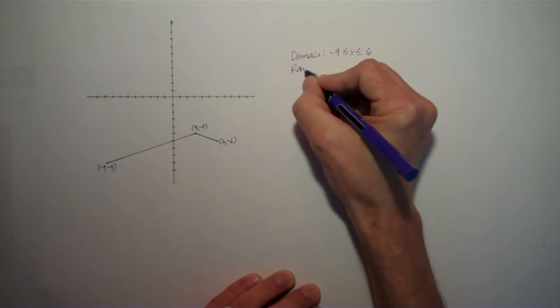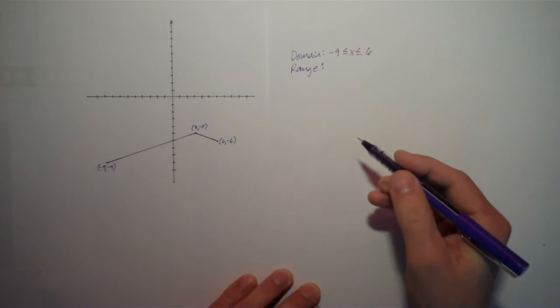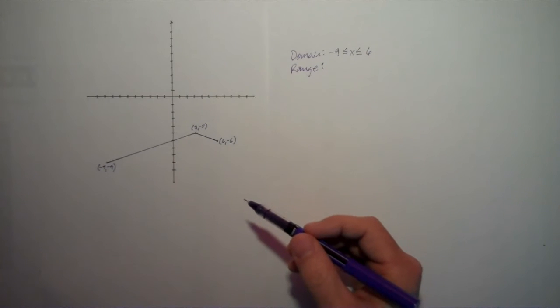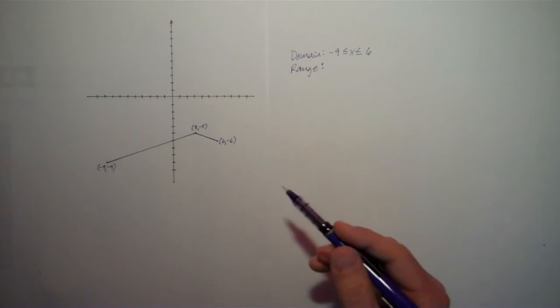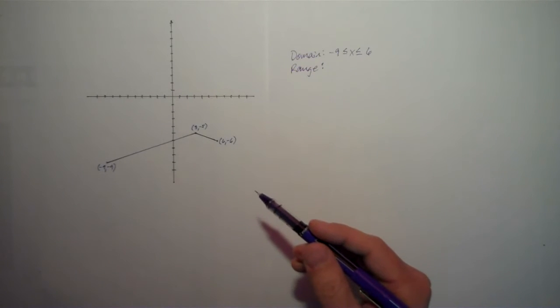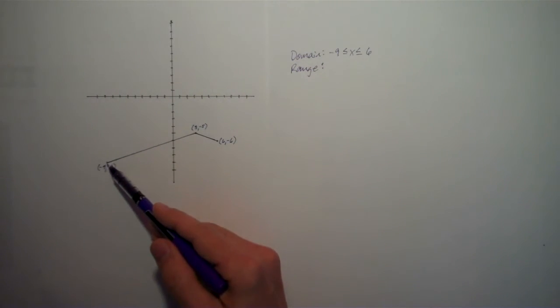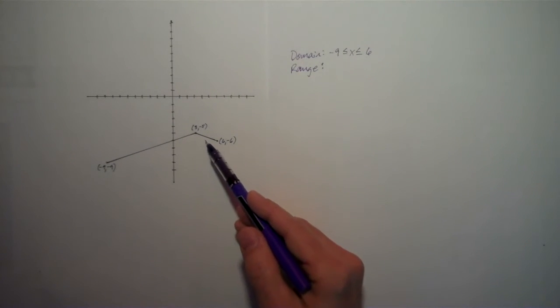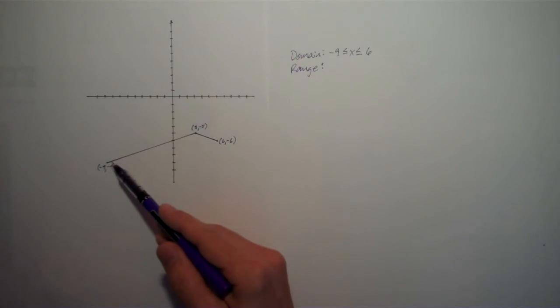Now, let's look at the range. The range of the function is all the possible values of the y variable, also known as the dependent variable. And so now let's look at this. We start down here at the point negative 9, negative 9. It goes all the way up to 3, negative 5, and then down again to 6, negative 6.